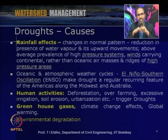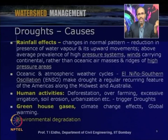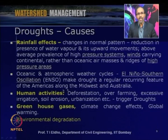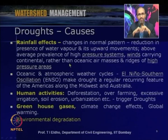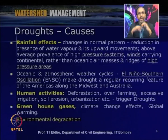Other causes include oceanic and atmospheric weather cycles — like El Niño–Southern Oscillation — making drought a regular recurring feature in the Americas, along the Midwest, and Australia. Human activities also cause droughts: deforestation, over-farming, excessive irrigation, soil erosion, and urbanization trigger droughts. There are many examples, such as the Gujarat Kutch region and Rajasthan in India, where deforestation and over-farming over long periods have led to adverse effects including drought.